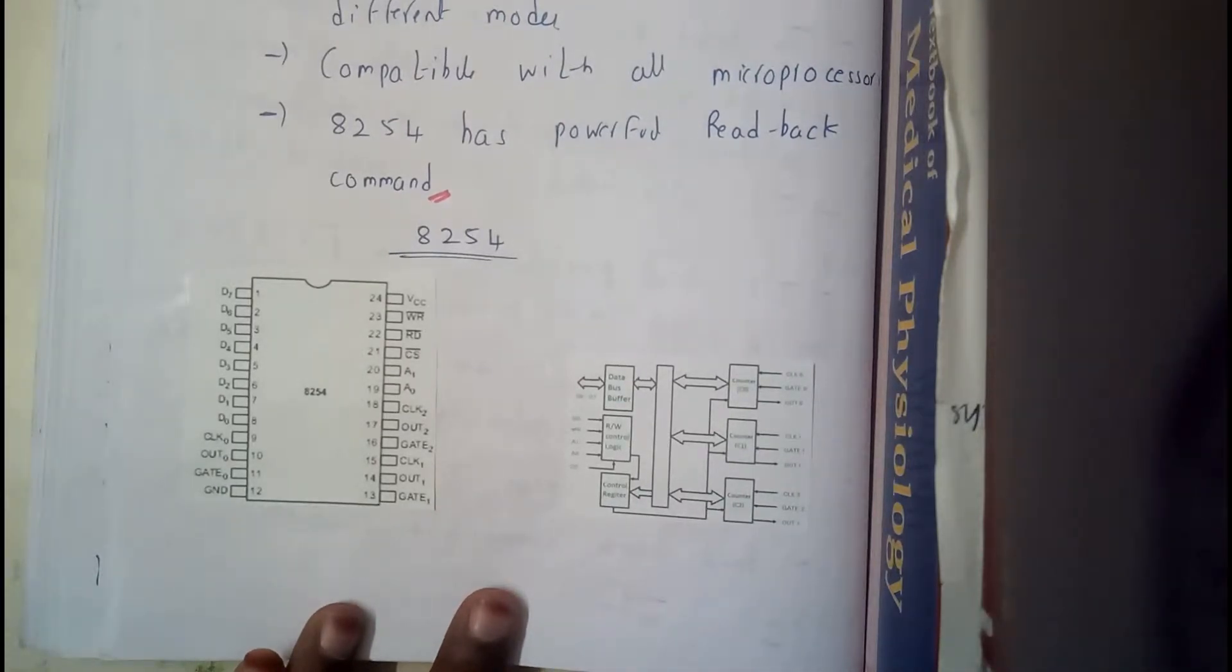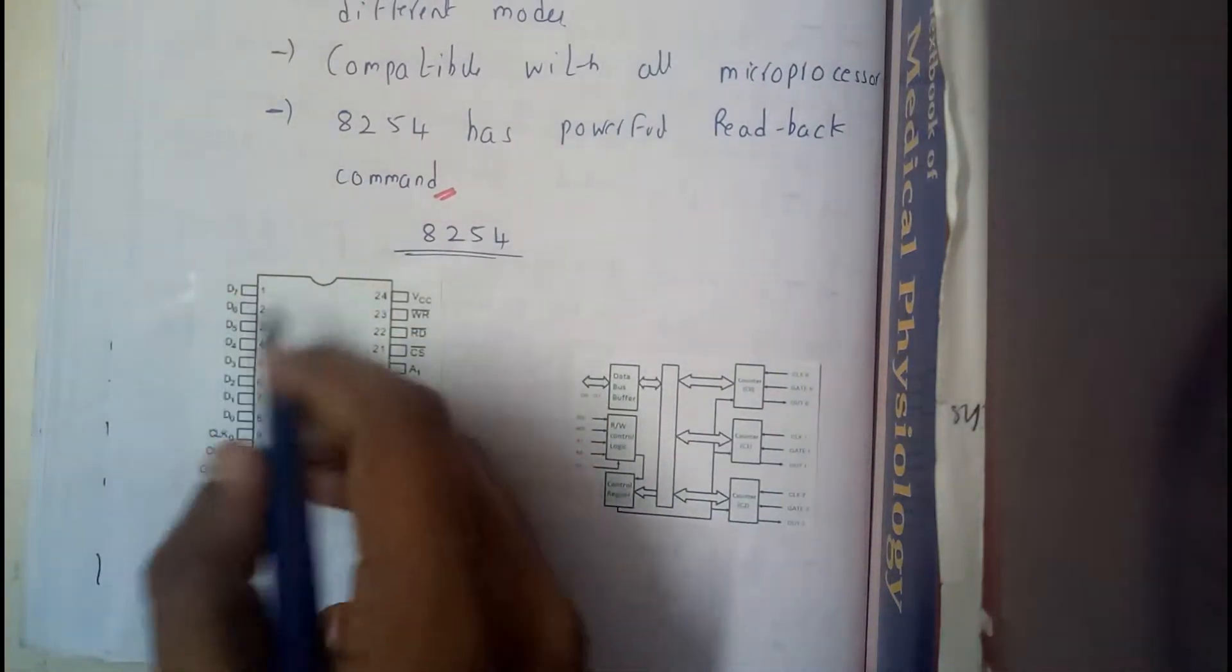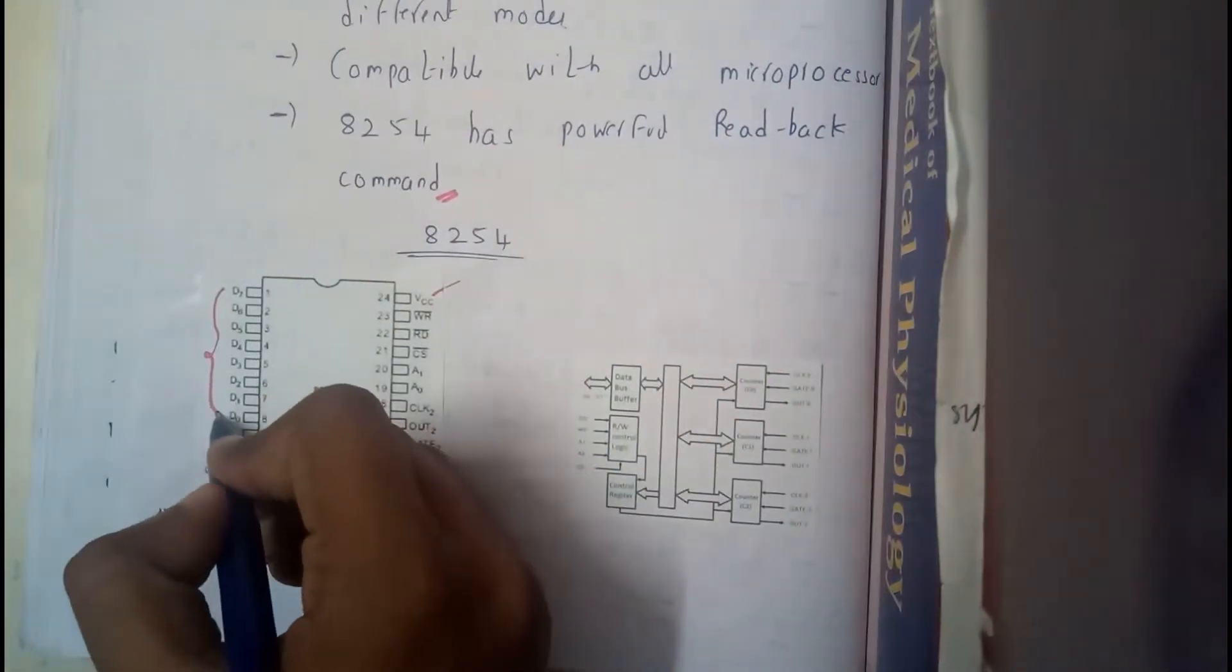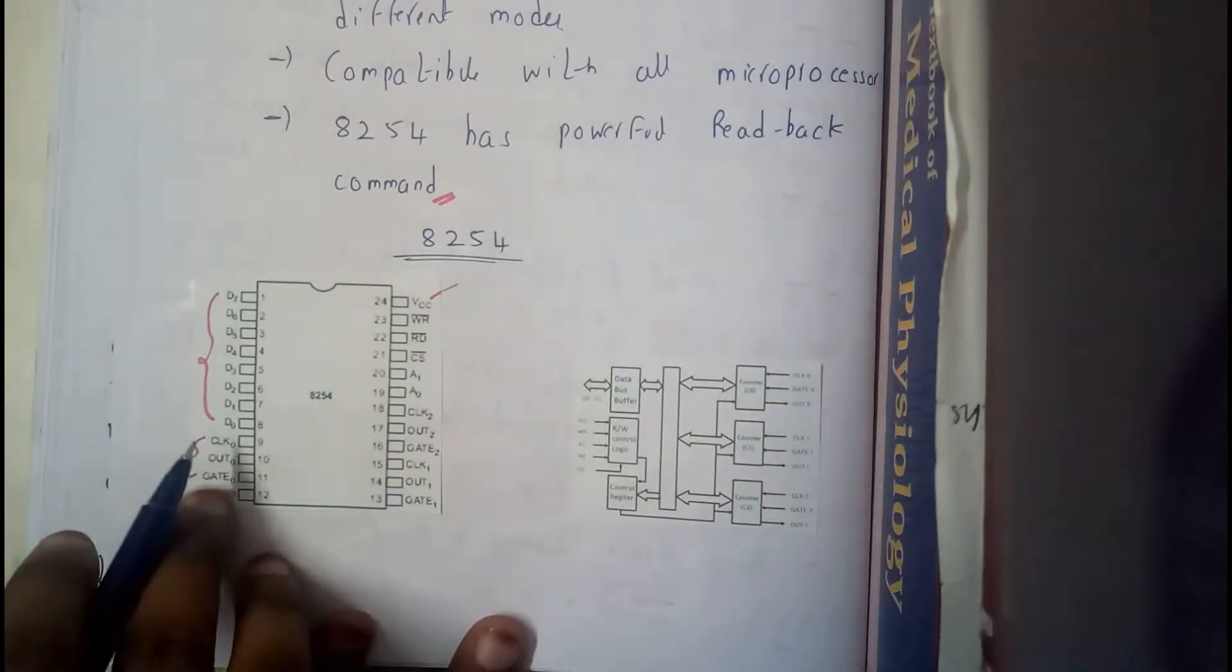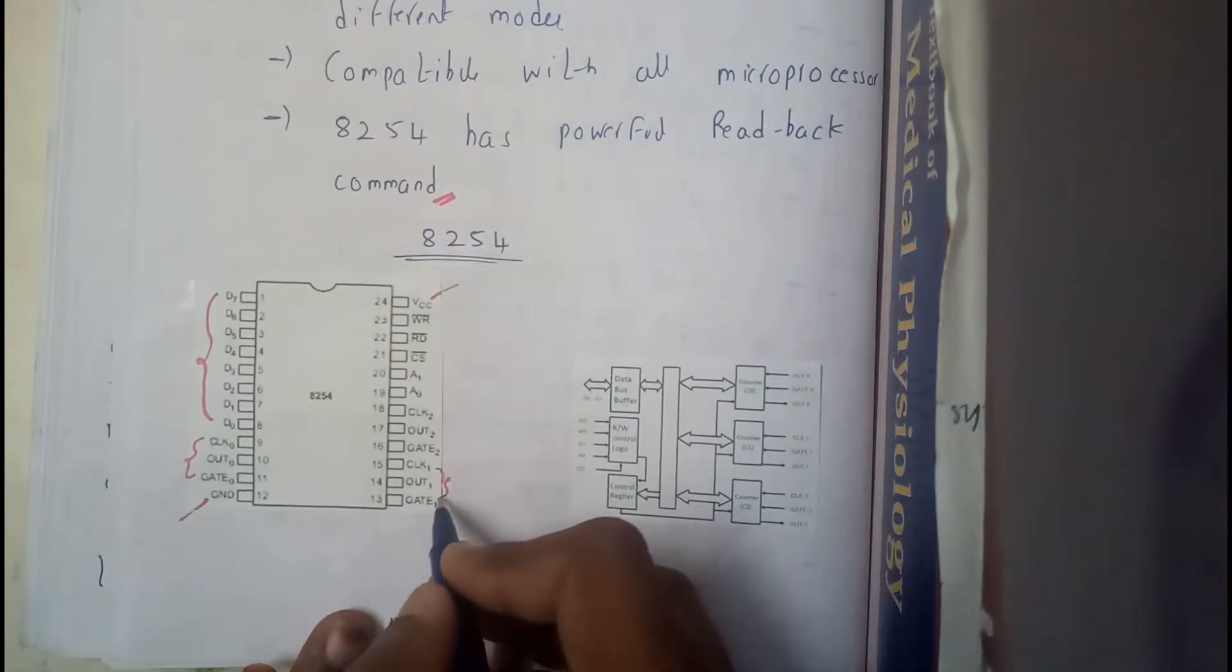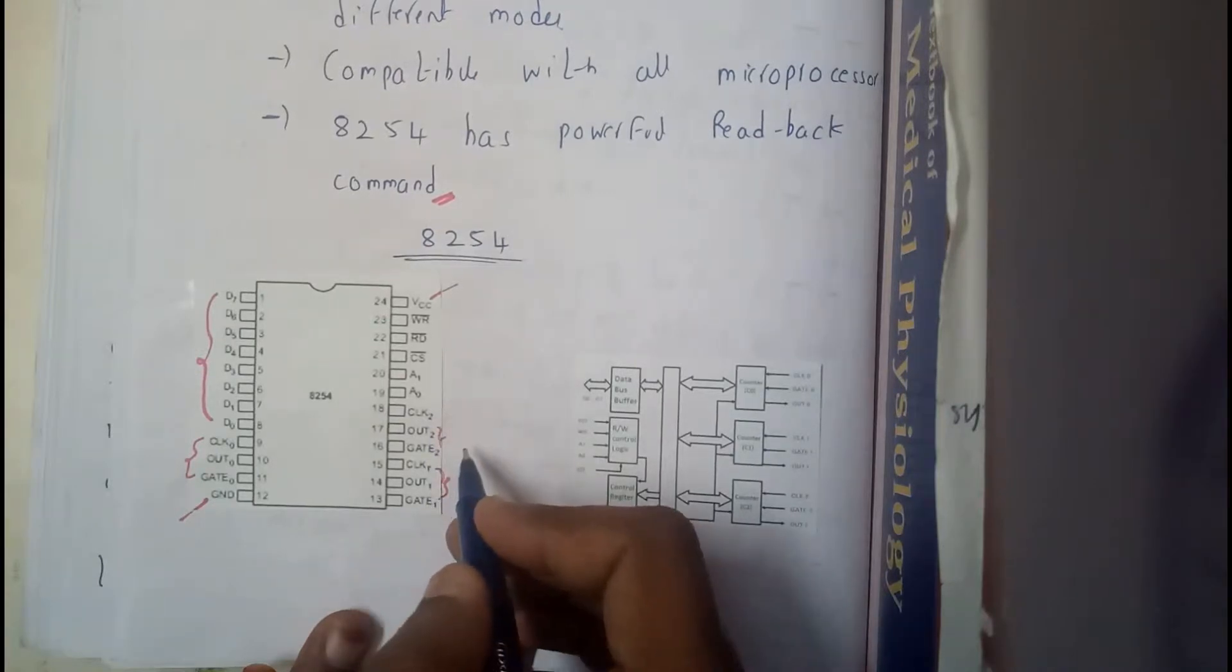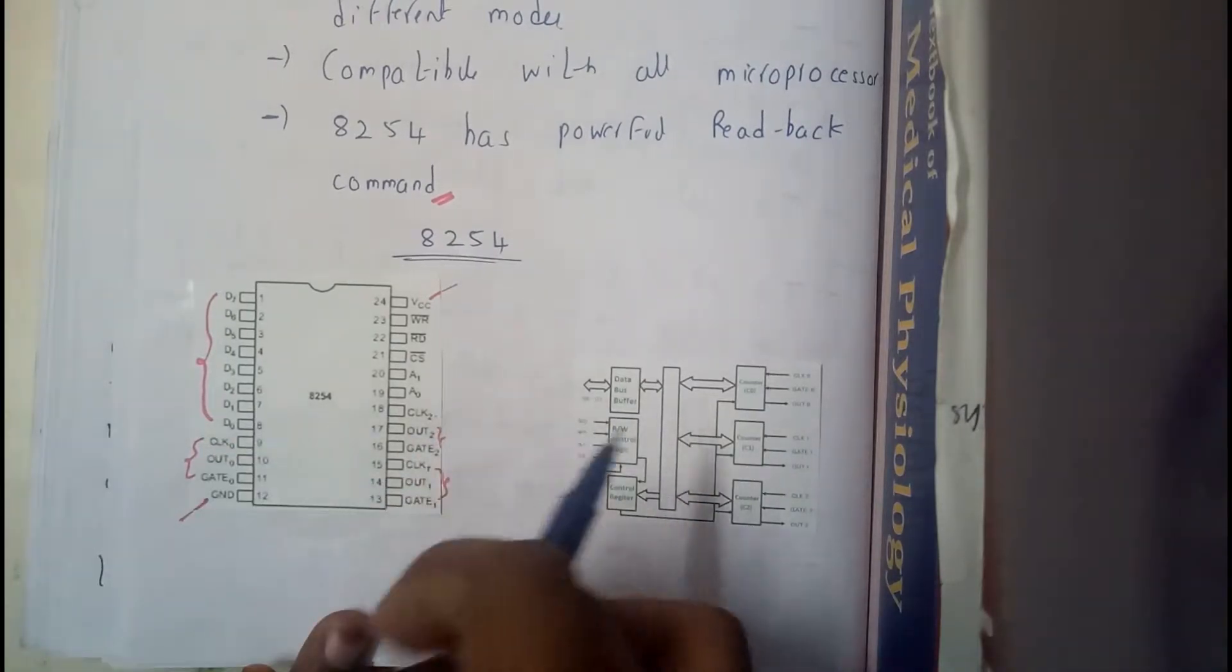But there will be only a small change I found. Ok there is no change, I forgot. So first we will be writing ground, power supply, the 8 data lines. Then we will be writing for counter 1. Clock, output gate, here also we got clock output gate. That's the only difference, there these two shuffled right. Or this is the correct order, just check that before you are reading this. So clock output gate, clock output gate, clock output gate. In this the 3 are similar in order.